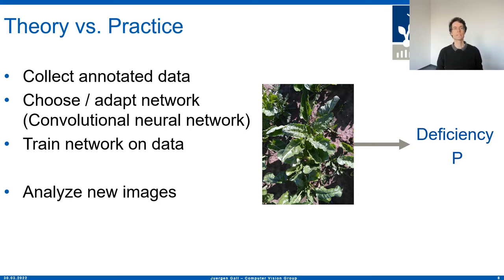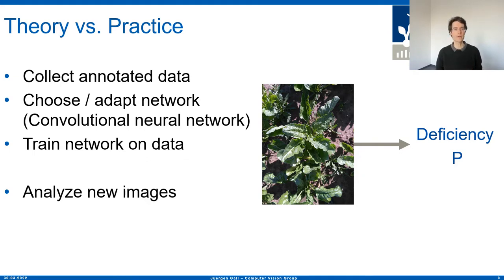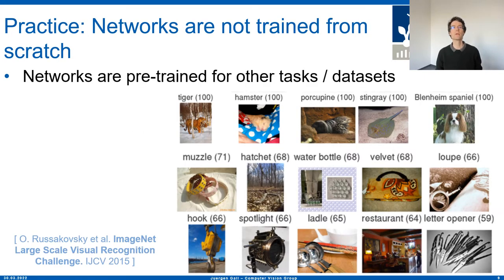That's how it works in theory, but that's not how it's done in practice. There's one small but very important difference, and that's the connection to representation learning. Instead of training the network from scratch only on the data you have collected, you start with a pre-trained network. A very popular dataset for pre-training is the ImageNet dataset.